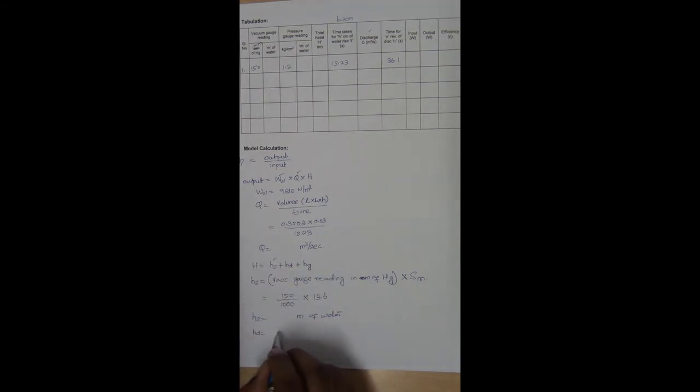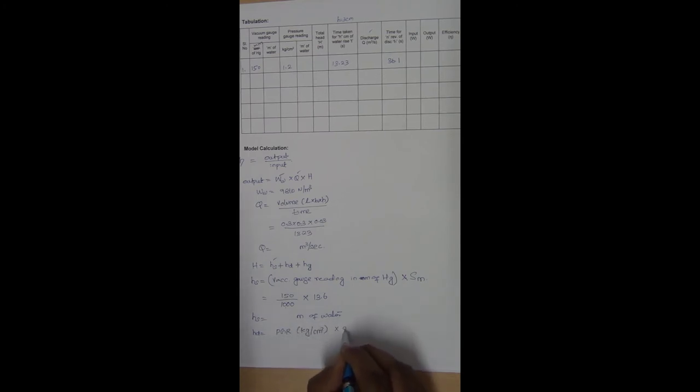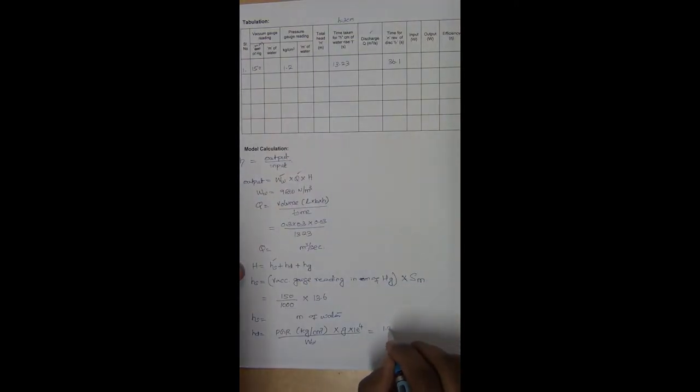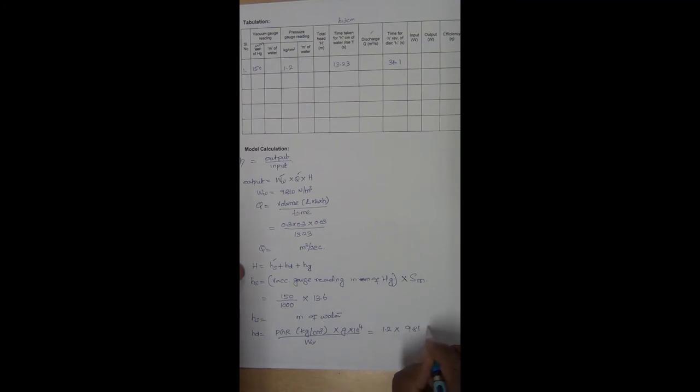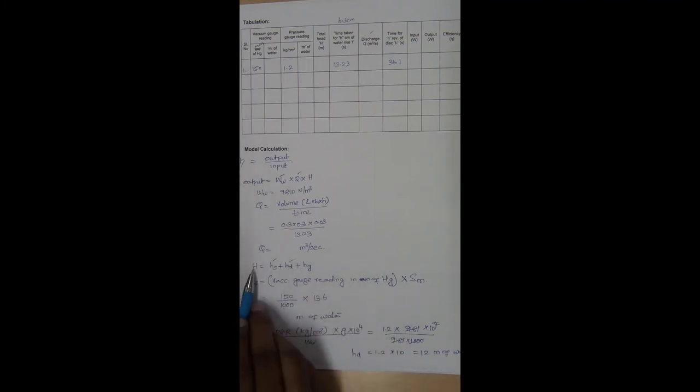Now to calculate Hd, pressure gauge reading in kg per centimeter square into g into 10 power 4 divided by specific weight of water. So which is equal to 1.2 here. So 1.2 into g is 9.81 into 10 power 4. Specific weight of water is 9810. So I will write it as 9.81 into 1000 to cancel it. So 1.2 into 10. So this is my Hd. So 12 meter of water. So Hd we have got. For calculating total head we have got Hs, we have got Hd.